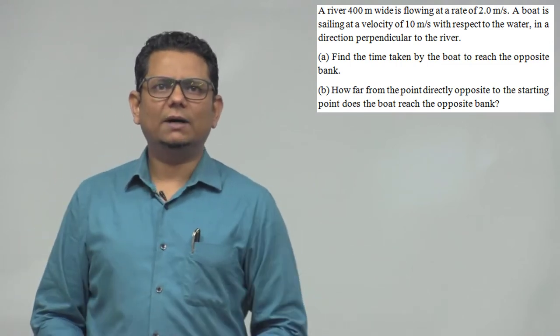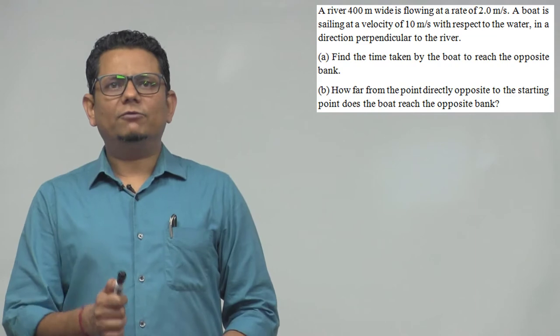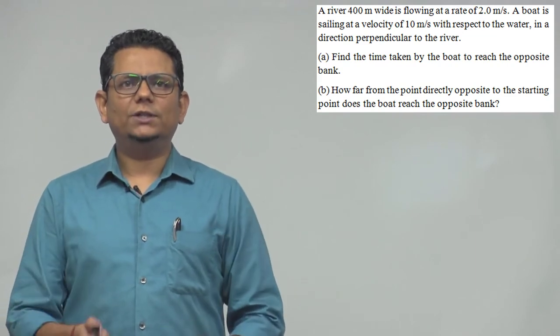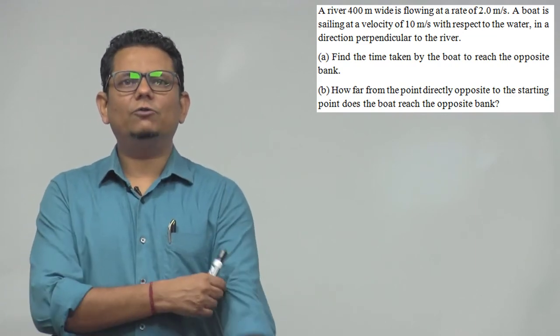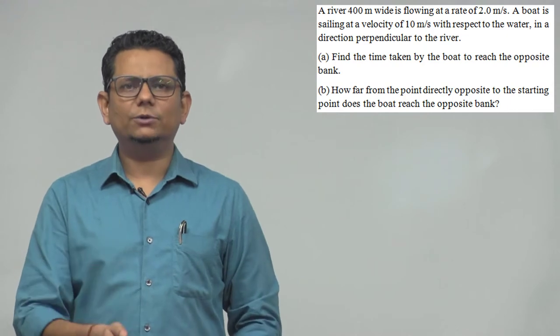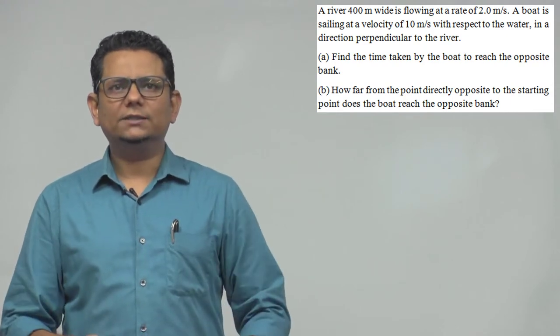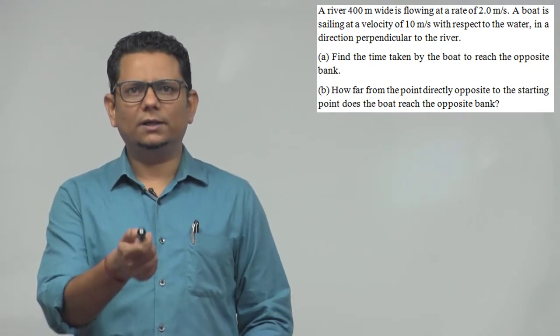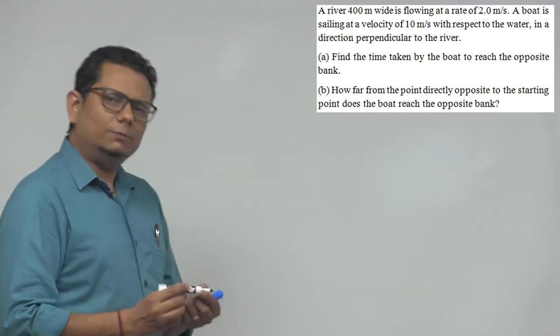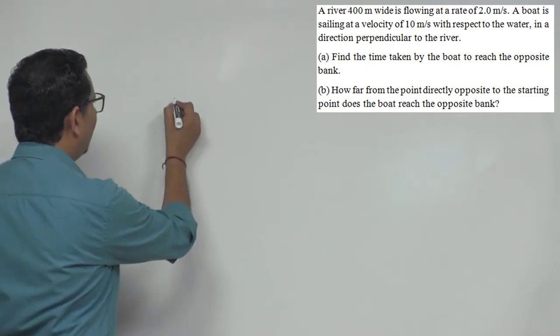There are two parts. Part (a): Find the time taken by the boat to reach the opposite bank. Part (b): How far from the point directly opposite to the starting point does the boat reach the opposite bank? We need to find the drift.